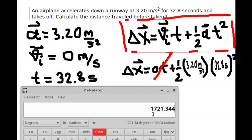1,721.344. 3 significant figures for acceleration. 3 significant figures for time. That means we need to keep 3 significant figures only.